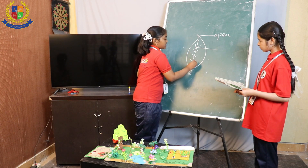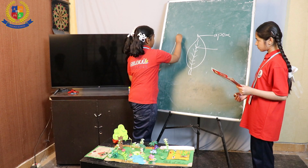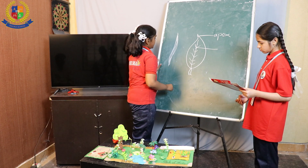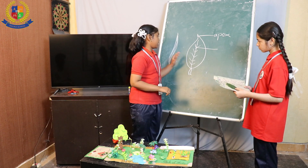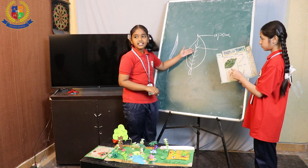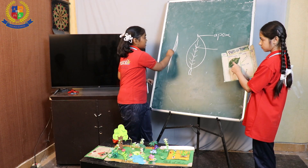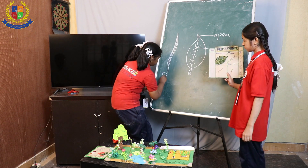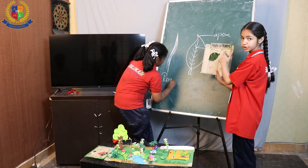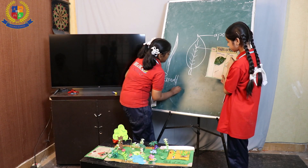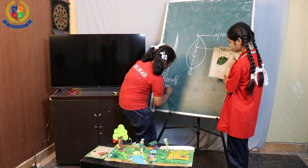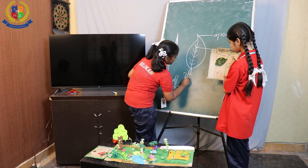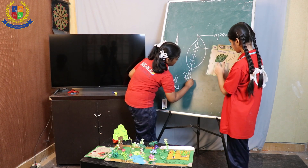Why are there two types? Because if you see both leaves, we can find one difference. Here the veins are arranged opposite each other. And here they are parallel. So this is called a parallel venation leaf, and this is called reticulate venation.